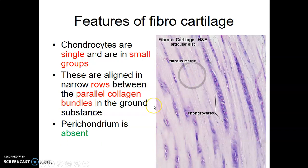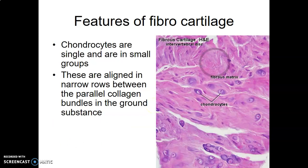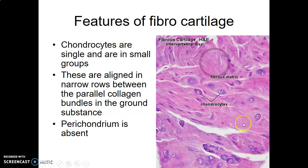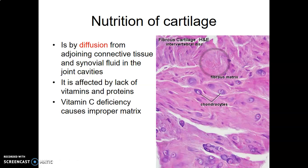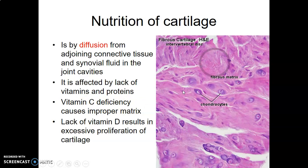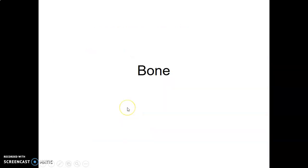We saw perichondrium in hyaline and elastic cartilages. The features of fibrocartilage: chondrocytes in parallel rows, dense thick collagen fibers, and perichondrium absent. Cartilage generally does not have direct blood vessels; it feeds via diffusion from adjacent tissue. You need vitamins for collagen processing — people with vitamin C deficiency will have affected matrix, so the cartilage will not be good. Vitamin D is also necessary.